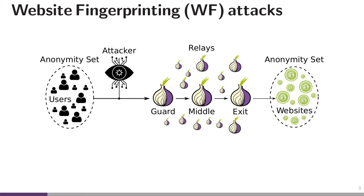Attacks are surprisingly good at this, in particular if you consider deep learning-based attacks. It turns out that recognizing patterns of network traffic — encrypted network traffic — is similar to detecting phases in images. So deep learning is very good at this.